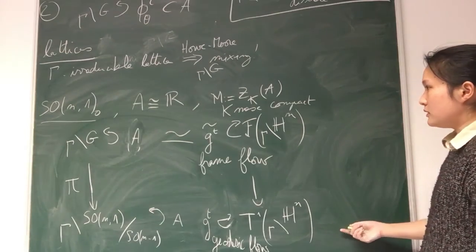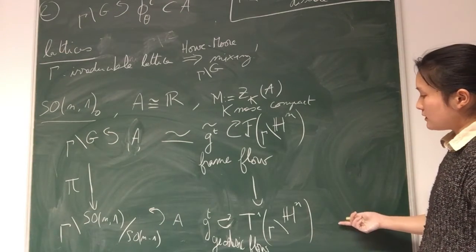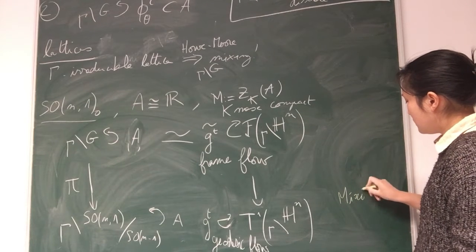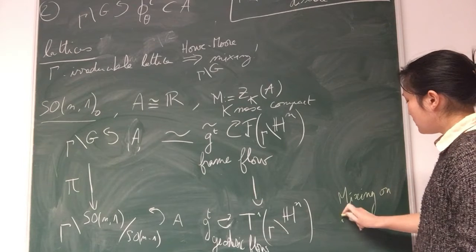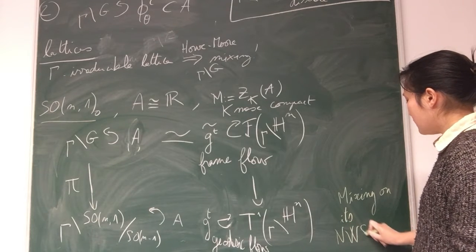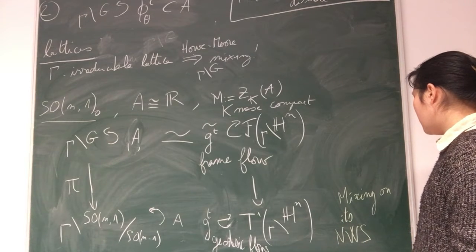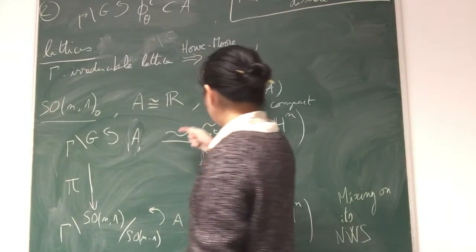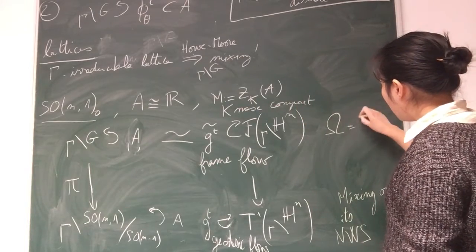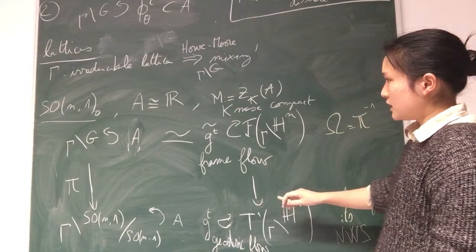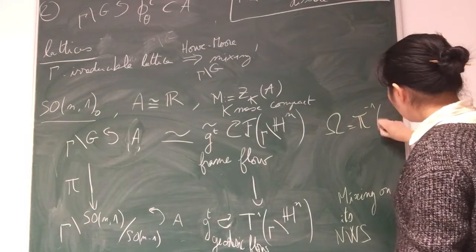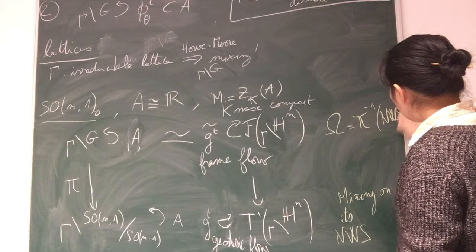Mixing here is very well known in the Bansky-Dani setting. And here, since M is SO(n-1) and is connected, I only have to take omega to be the pre-image by this projection of the non-wandering set for the geodesic flow.